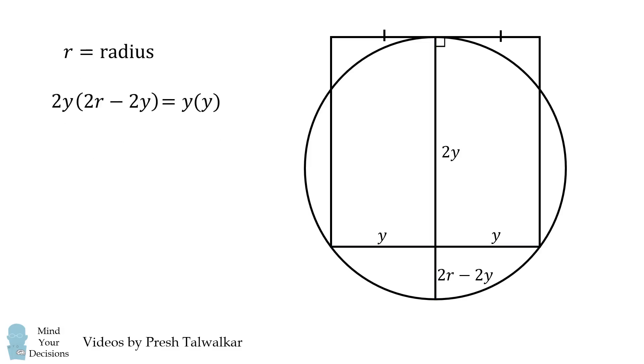Let's simplify this equation. We'll first distribute, and then we'll group like terms. We'll then factor y, and we can then solve this equation. Y is either equal to 0, or y is equal to 4 fifths r.